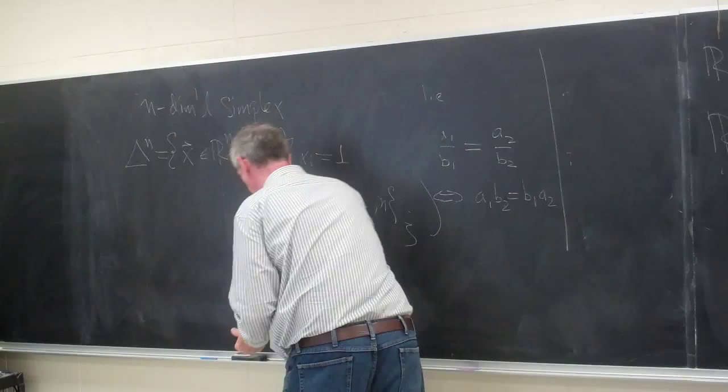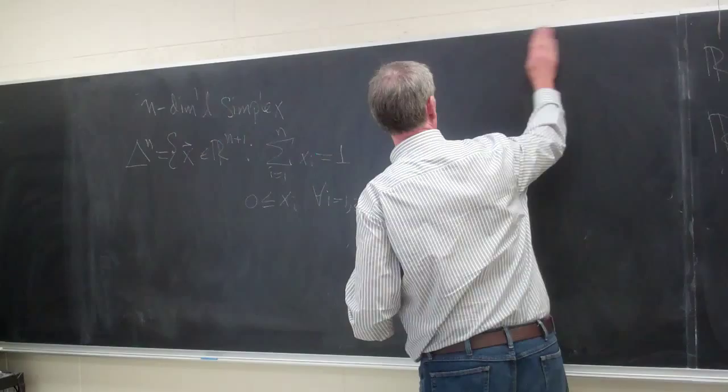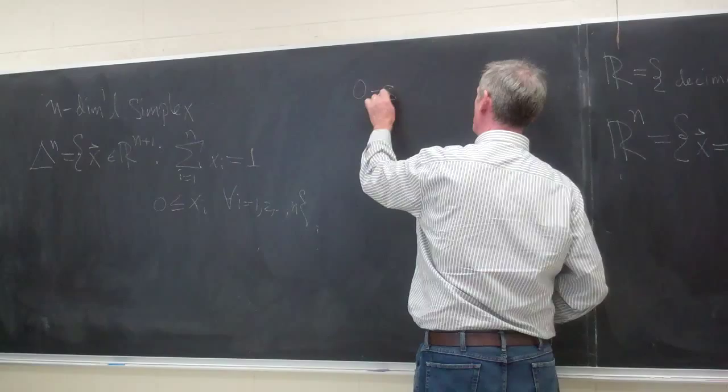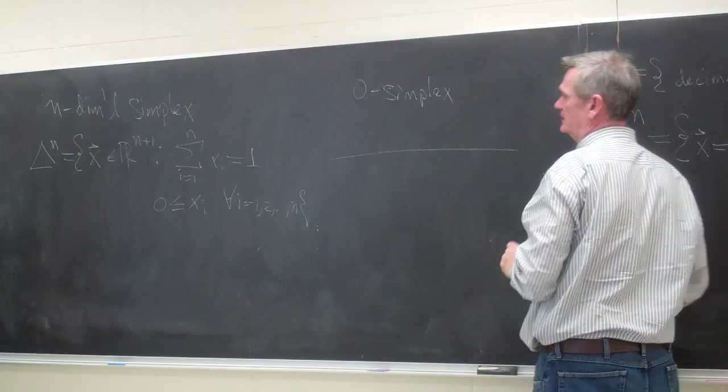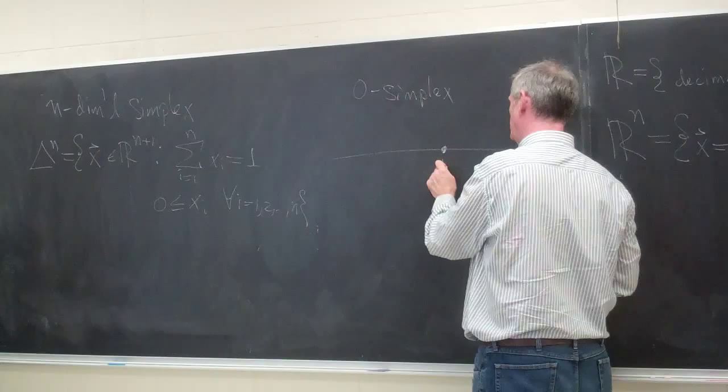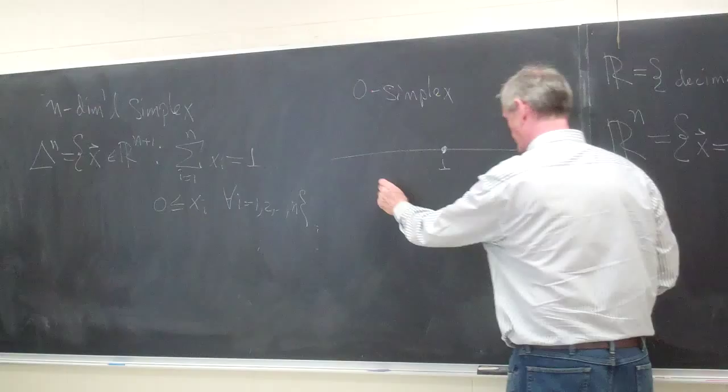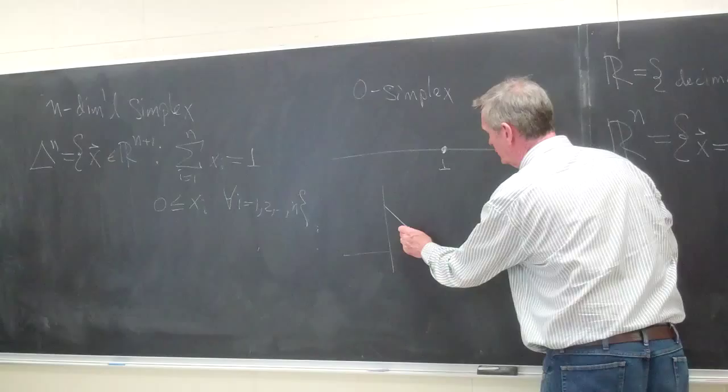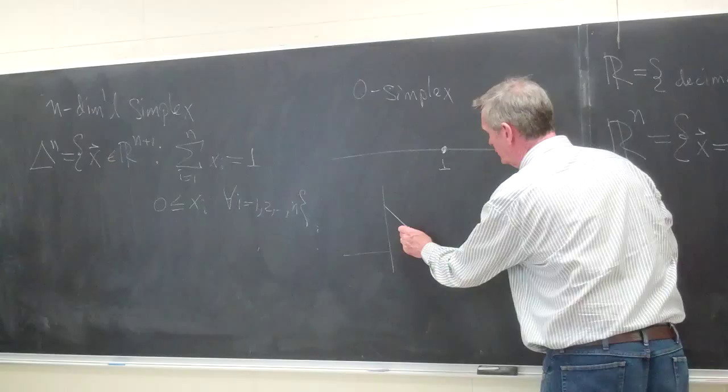And so the zero-dimensional simplex. Let's see. That means that we take vectors in R where the coordinate is equal to 1. And so the zero-dimensional simplex is just a point. The one-dimensional simplex, we look at the line x plus y is equal to 1. We look at the portion of the line in the first quadrant and then we just take the point one-half, one-half.